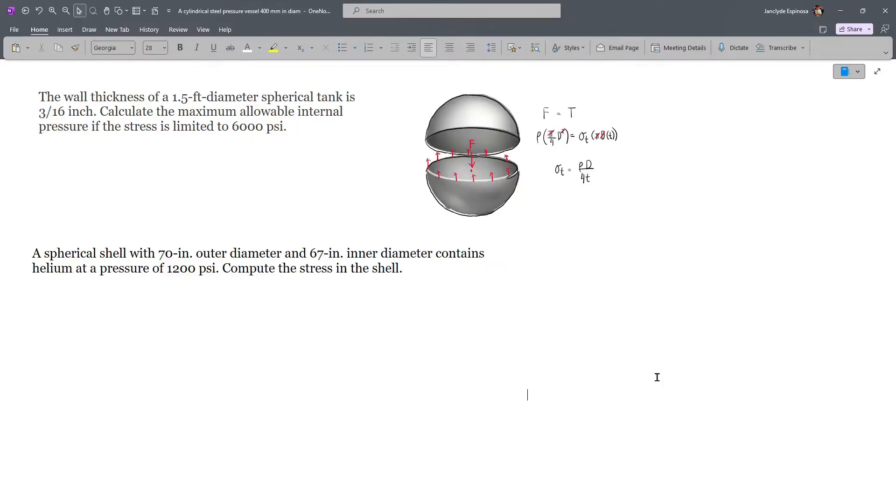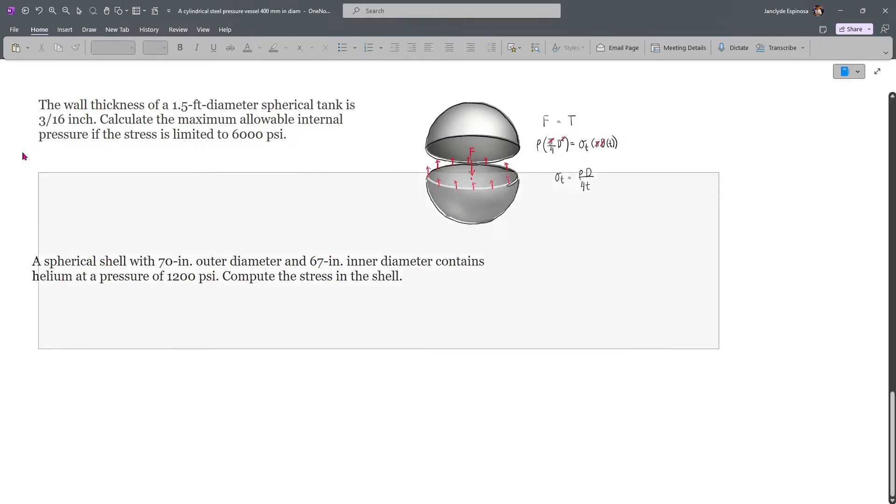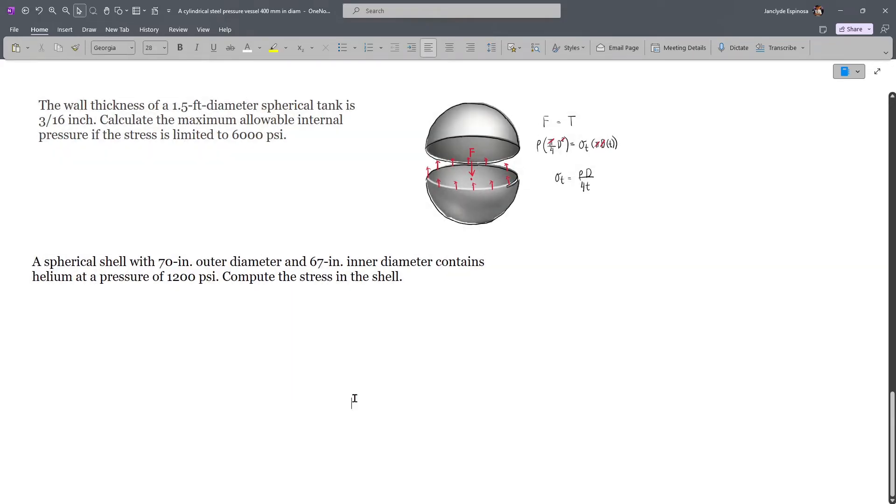Now, the problems involving spherical vessels are actually grouped so that I will be able to discuss these two examples. For the first one, the wall thickness of a 1.5 feet diameter spherical tank is 3/16 inches. We have to calculate the maximum allowable internal pressure if the stress is limited to 6000 psi.